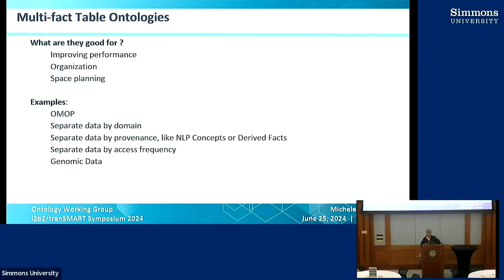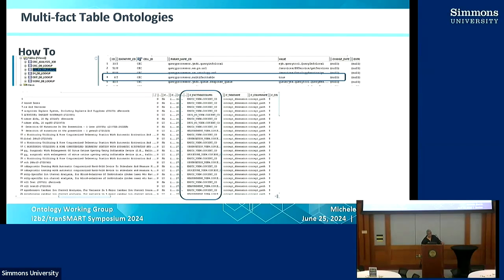At our site, we're also using it to separate our genomics data from our EHR data. To implement the multi-fact table, you just turn on a parameter in the hive called Query Process Multi-Fact Table and set it to true. There's a creative way that triggers the query generation tool to look in different fact tables — basically you're just prefixing the c_fact_table column with the name of the table or view that the data is in. When the query gets generated, it creates a different kind of query that will go to your different fact tables.